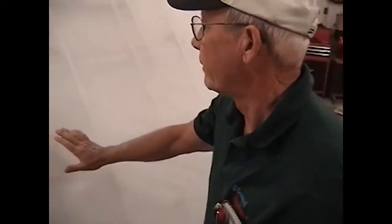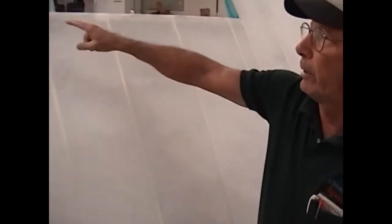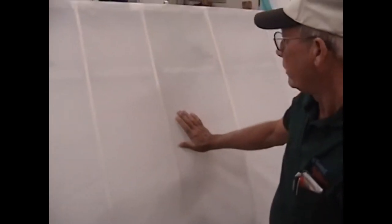We've got the fabric on the top surface of the wing. It's been glued down all around the perimeters, so we're ready to do the initial shrink.